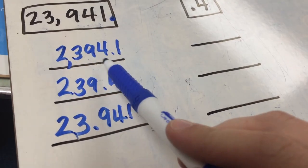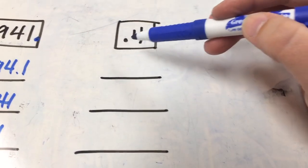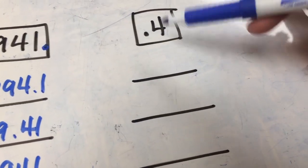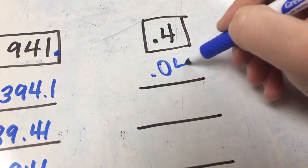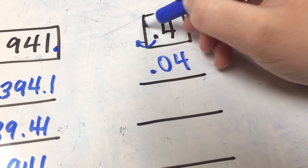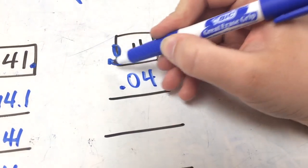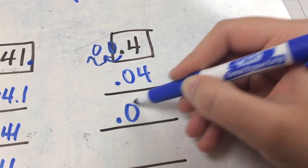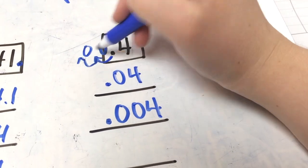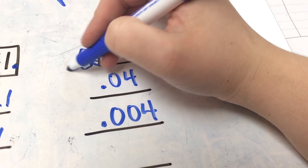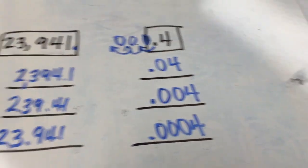Do you see how our whole number goes from 2,394 all the way down to 23? It gets smaller and smaller. Now 0.4 divided by 10 — we need to bounce this over one place, so we have 0.04. Divided by 100 — two zeros, so we go one, two spots, and our new number is 0.004, or 4 thousandths. And then 0.4 divided by 1,000 — three zeros — one, two, three jumps, so now we have 0.0004, and that's how you do it.